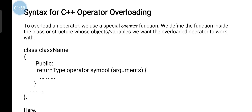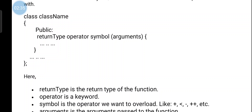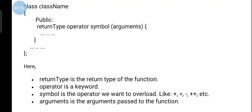The syntax for C++ operator overloading: to overload an operator, we use a special operator function. We define the function inside the class or structure whose object variables we want the overloaded operator to work with. The syntax is: class ClassName { public: return_type operator symbol(arguments) { } };